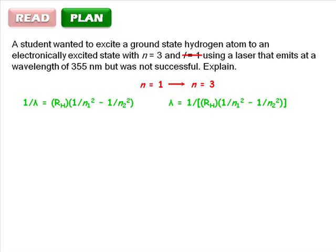The Rydberg constant, RH, is 1.097 times 10 to the 7 with units of inverse meters. So before we finish, we'll have to convert our answer to nanometers using the proper conversion.